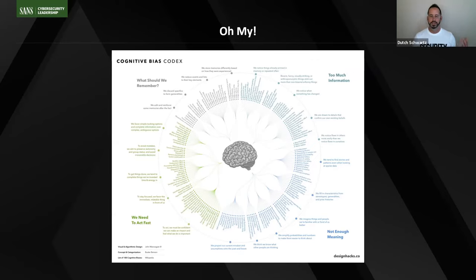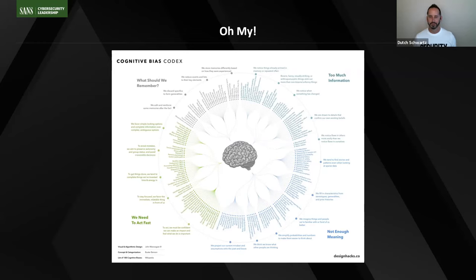So System 1 thinking is quick and dirty; System 2 thinking is slow and deliberate. System 2 thinking is where we want to turn our thought process in terms of how we might solve some of these challenges that are underlying this issue.